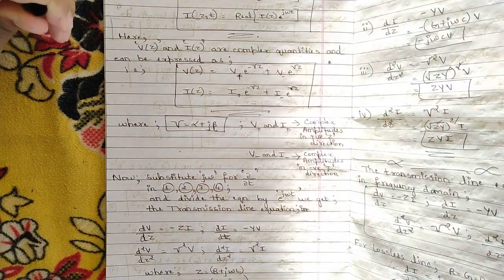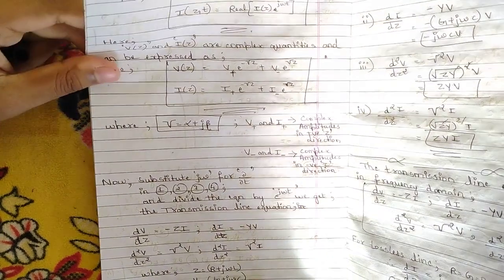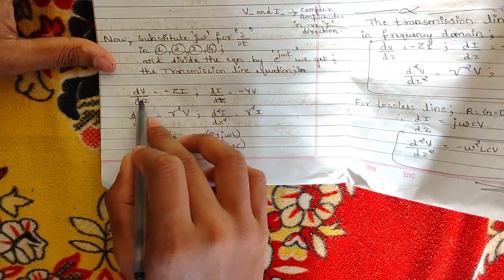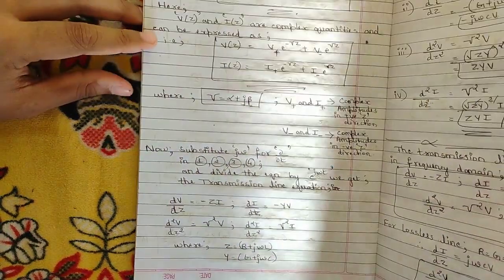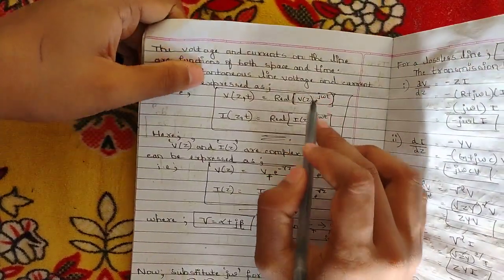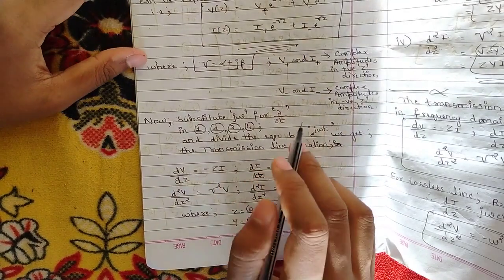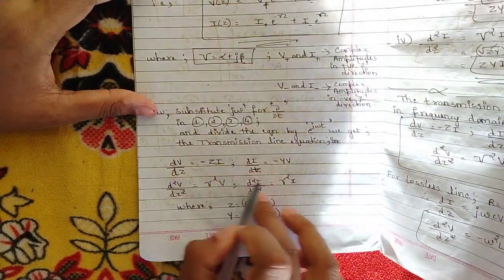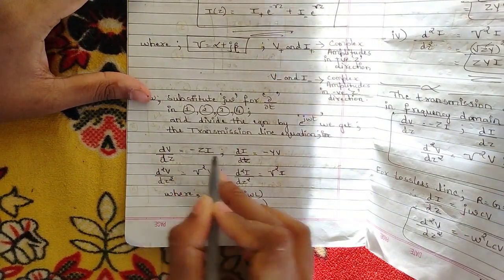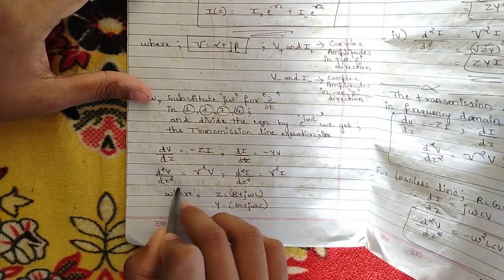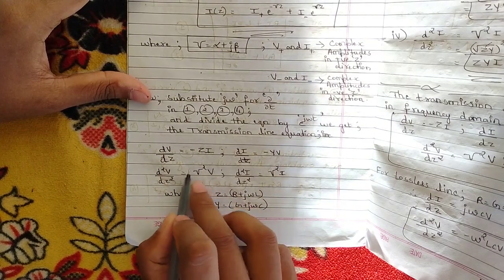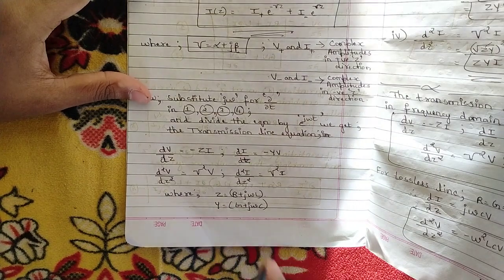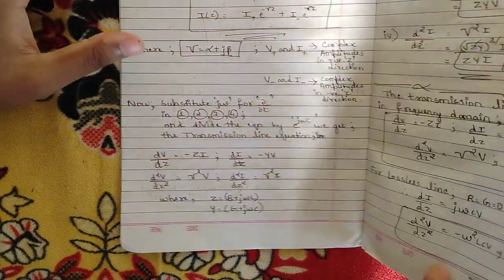To find ∂v/∂z and ∂i/∂z in phasor form, substitute j-omega for ∂/∂t in Equations 1 through 4 and divide by e^(jωt). This gives: ∂v/∂z = minus Z·i, ∂i/∂z = minus Y·v, ∂²v/∂z² = γ²·v, and ∂²i/∂z² = γ²·i, where Z = R + jωL and Y = G + jωC.